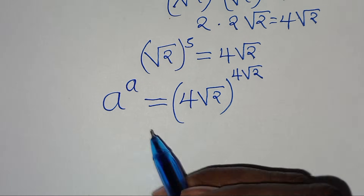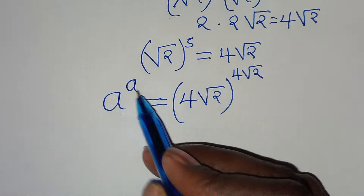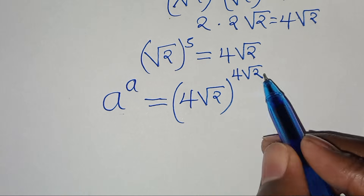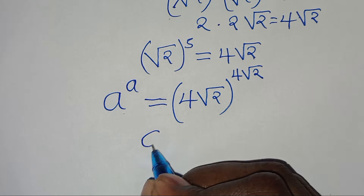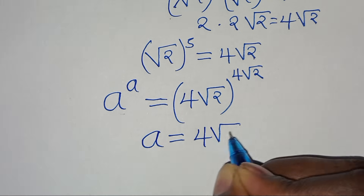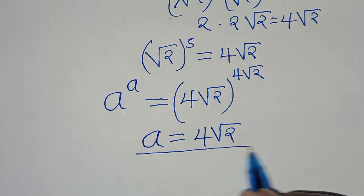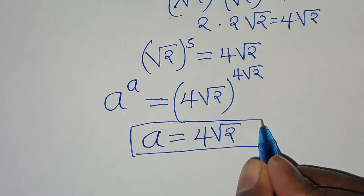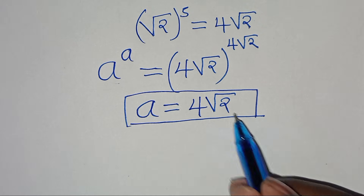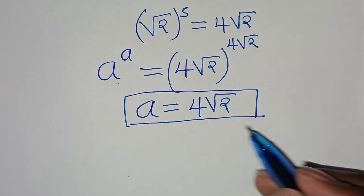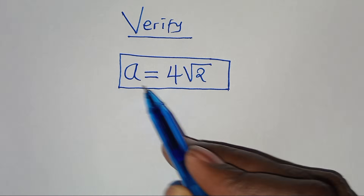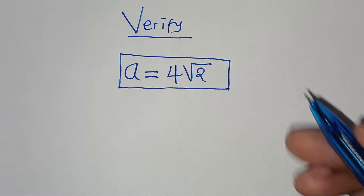Now it's clear that the base here is the same thing as the exponent, just as in a to the power of a. This concludes that the value of a is equal to 4 square root of 2. The next step is to verify that this value of a satisfies the equation.